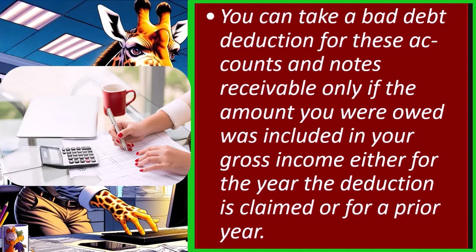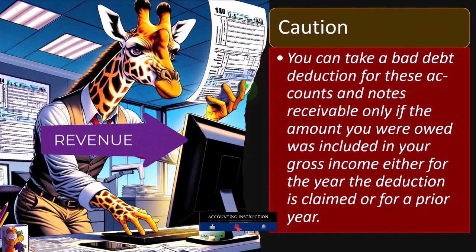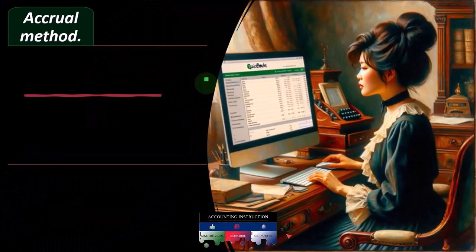If you were on a cash-based system and you were somehow still tracking the fact that you did work and they owed you money, but you weren't actually recording revenue at the point in time that you invoiced the client — when you did the work — that would be an unusual bookkeeping system, tracking accounts receivable without recording revenue when earned. If you're trying to stay in a cash-based system, you would have never recorded the receivable, and therefore you don't get the deduction because you never recorded the revenue in the first place.